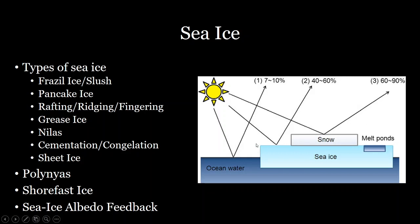If that sea ice melts, then the ocean water absorbs 90% or more of the sunlight that hits it, and so the area can get a lot warmer. As more ocean water is exposed, a warmer climate develops and more sea ice can melt, going into a positive feedback loop — a vicious cycle of more sea ice melting leading to more and more warming.